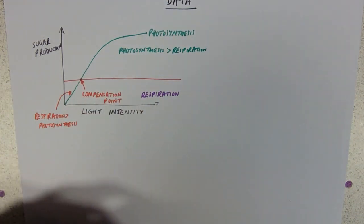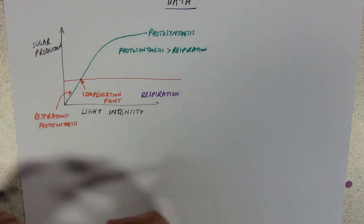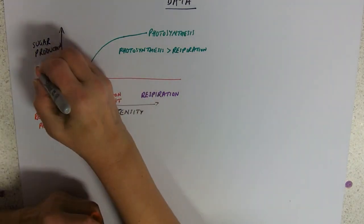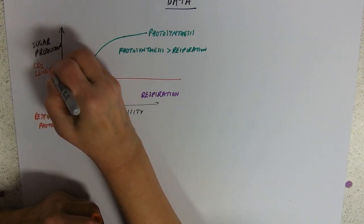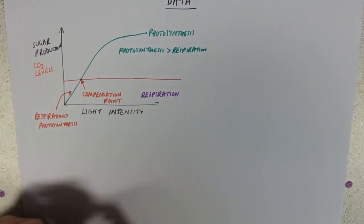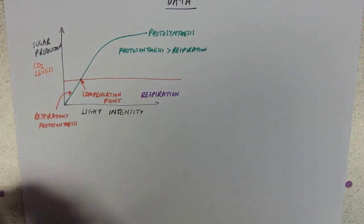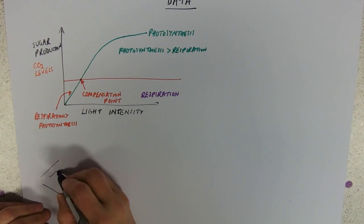Obviously, sugar production isn't the only thing that you could measure. And certainly in your practical book, you've got one where we look at carbon dioxide levels. That's the algae balls experiment. You pop your little algae balls that are photosynthesizing, put your lamp on. This is my lamp. I'm just going to tell you because I'm rubbish at drawing a light bulb.